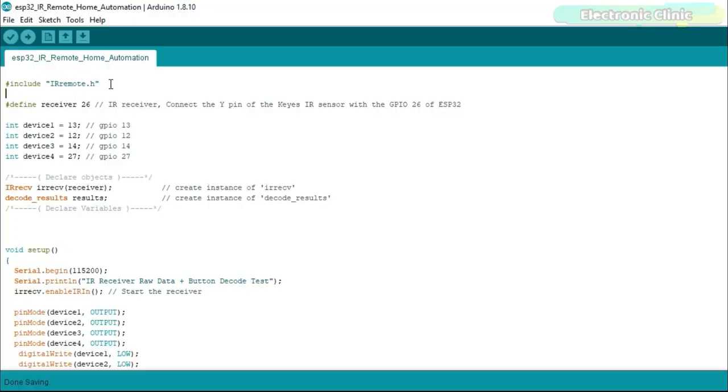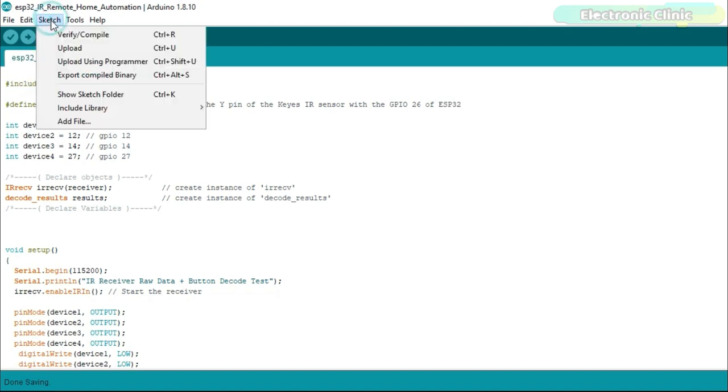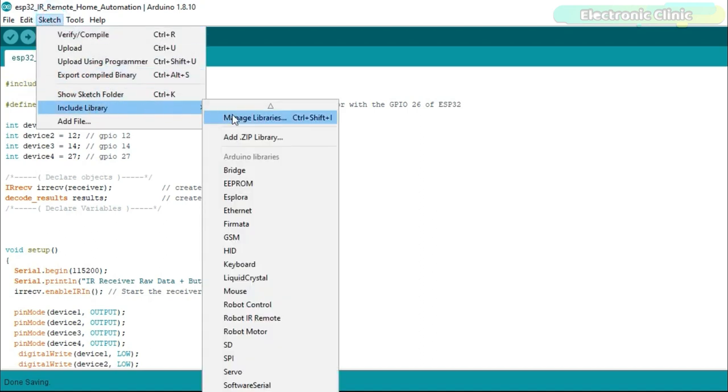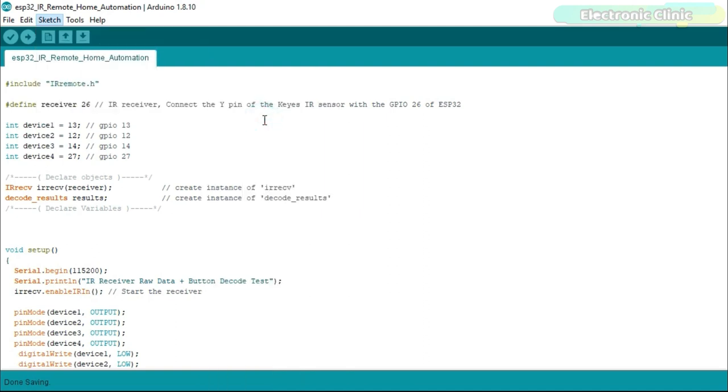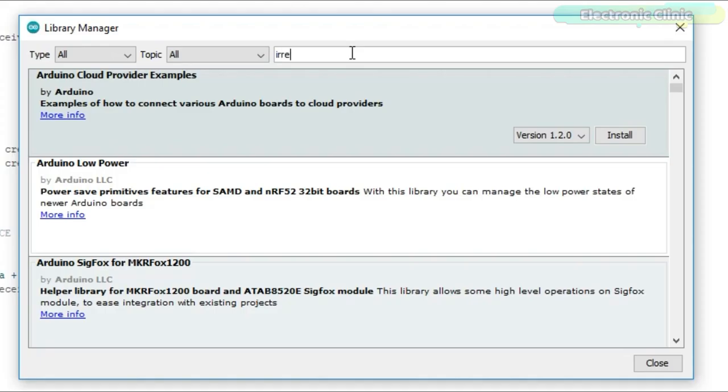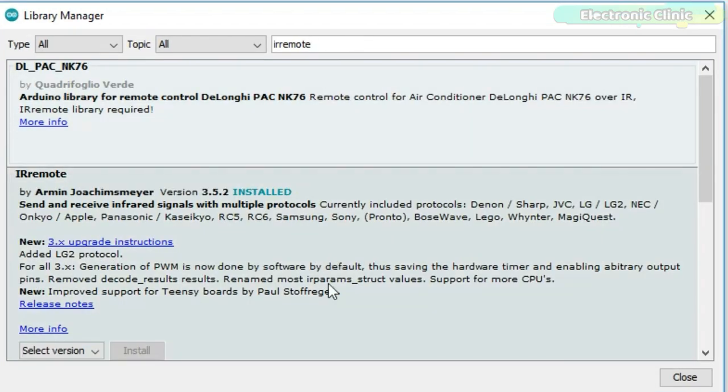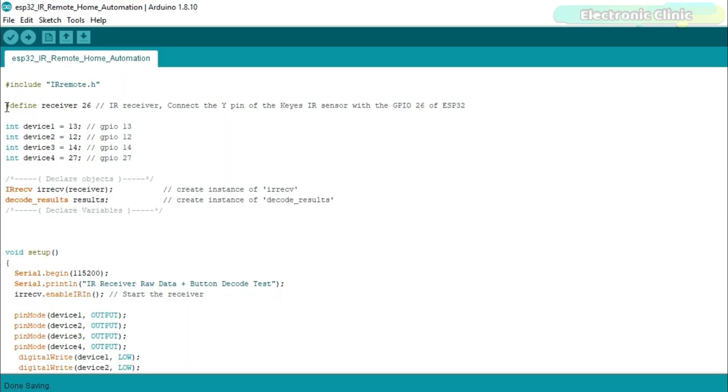Before you start the programming, first of all, make sure you install the IR remote library. For this, click on the Sketch menu, go to Include Library and then click on Manage Libraries. Search for the IR remote library and install the latest version. As you can see, I have already installed the IR remote library.